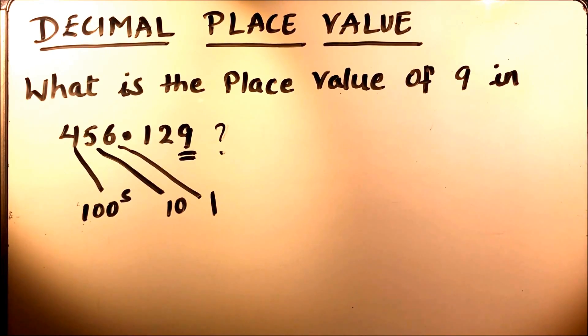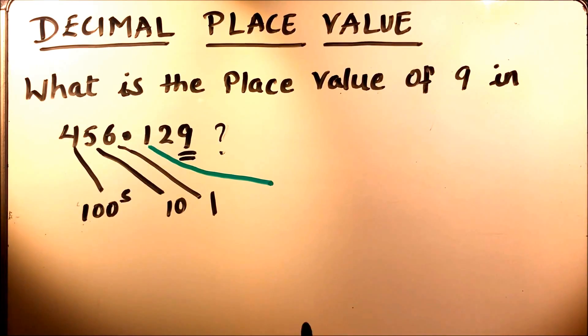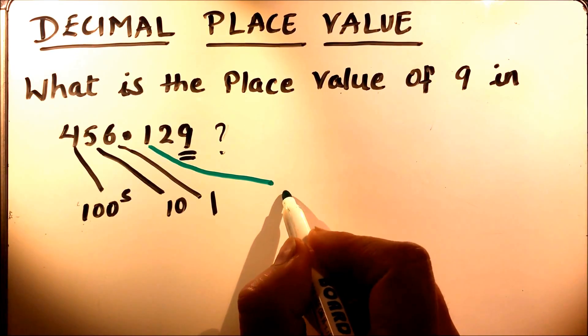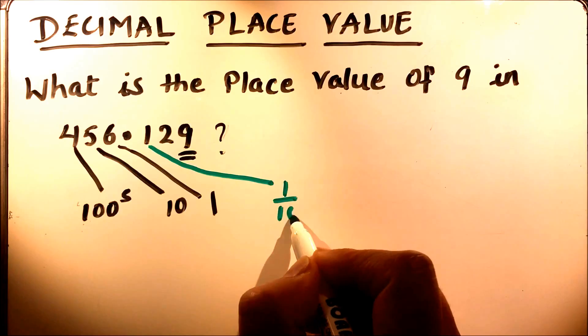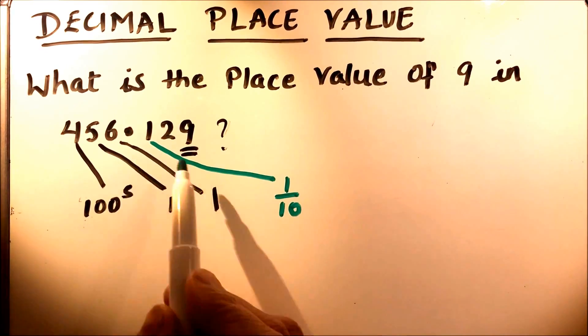Now what happens to the digits after the decimal point? So after the decimal point, this is point 1. Point 1 is the tenths digit, the place value is tenths place. This is called one tenth.